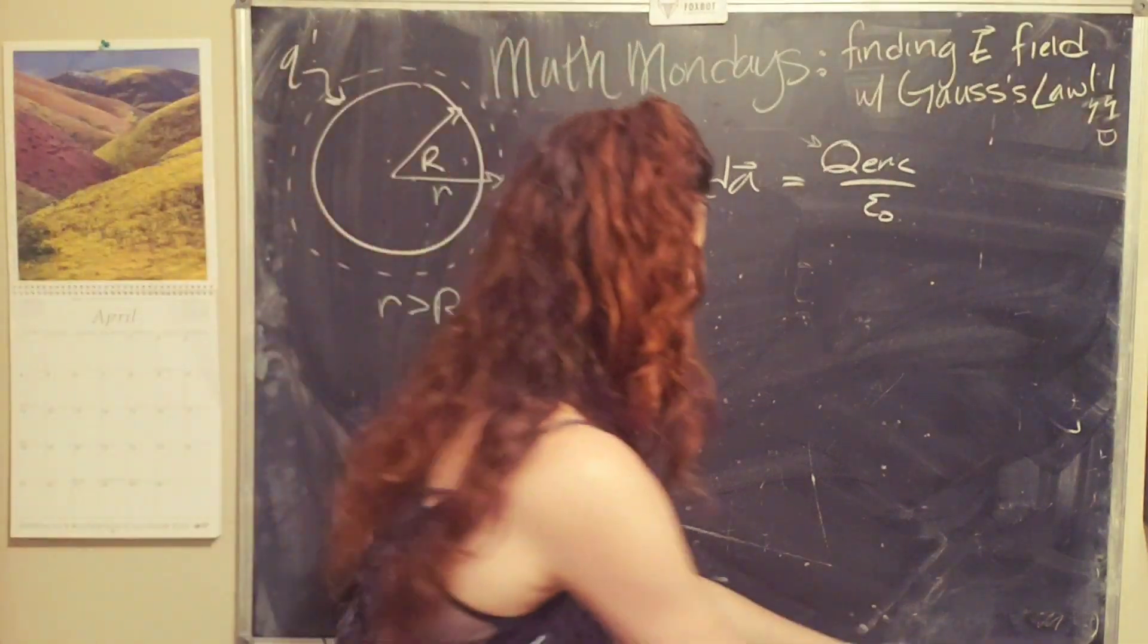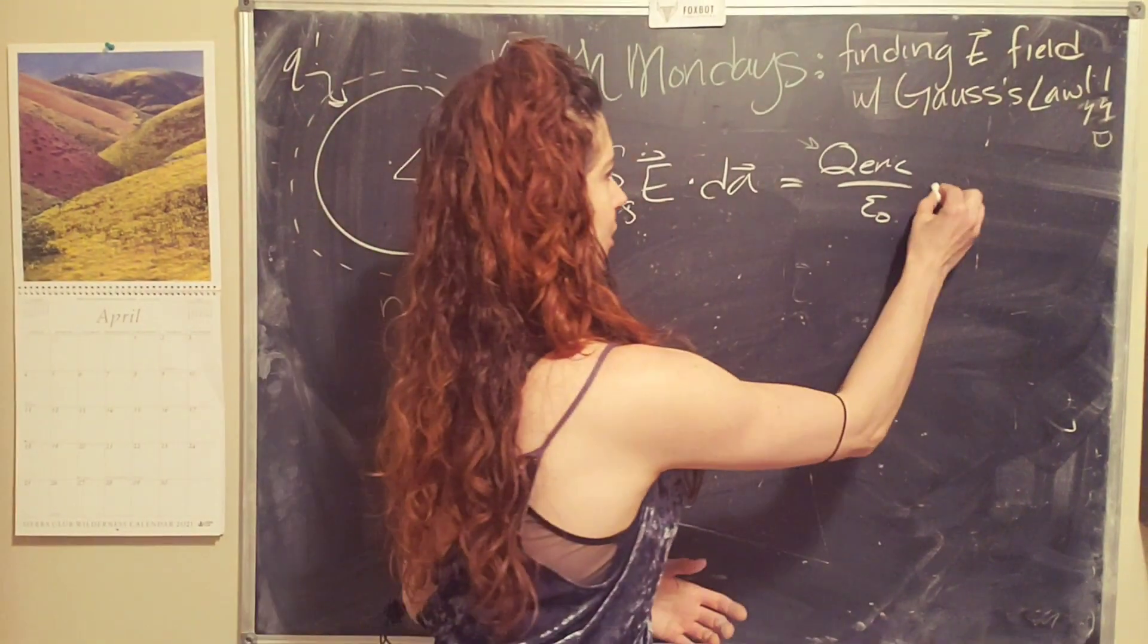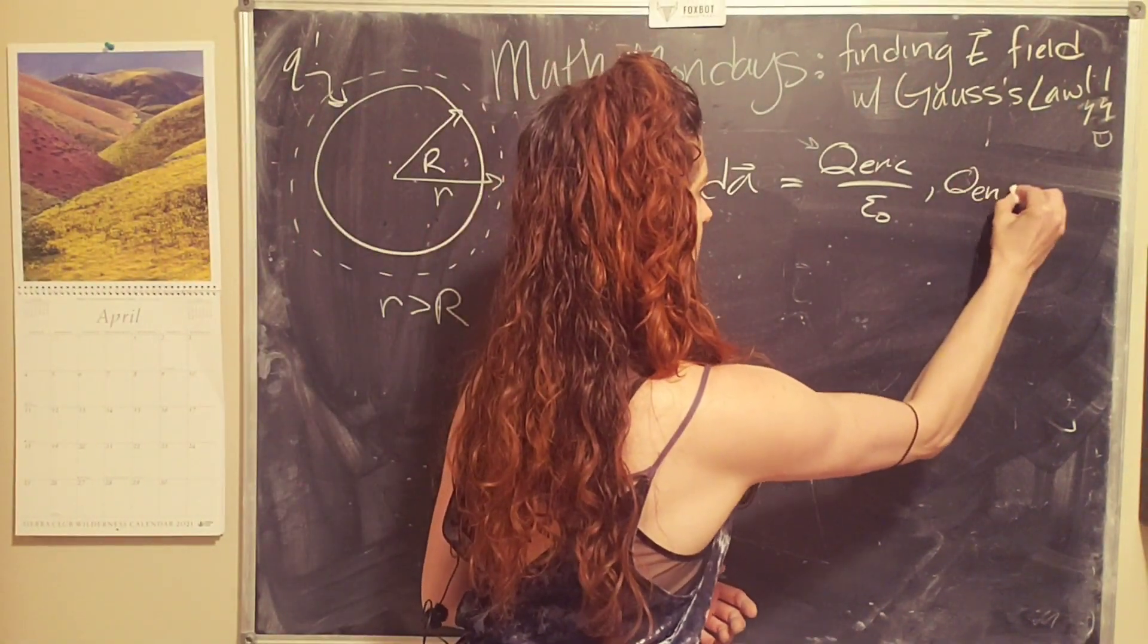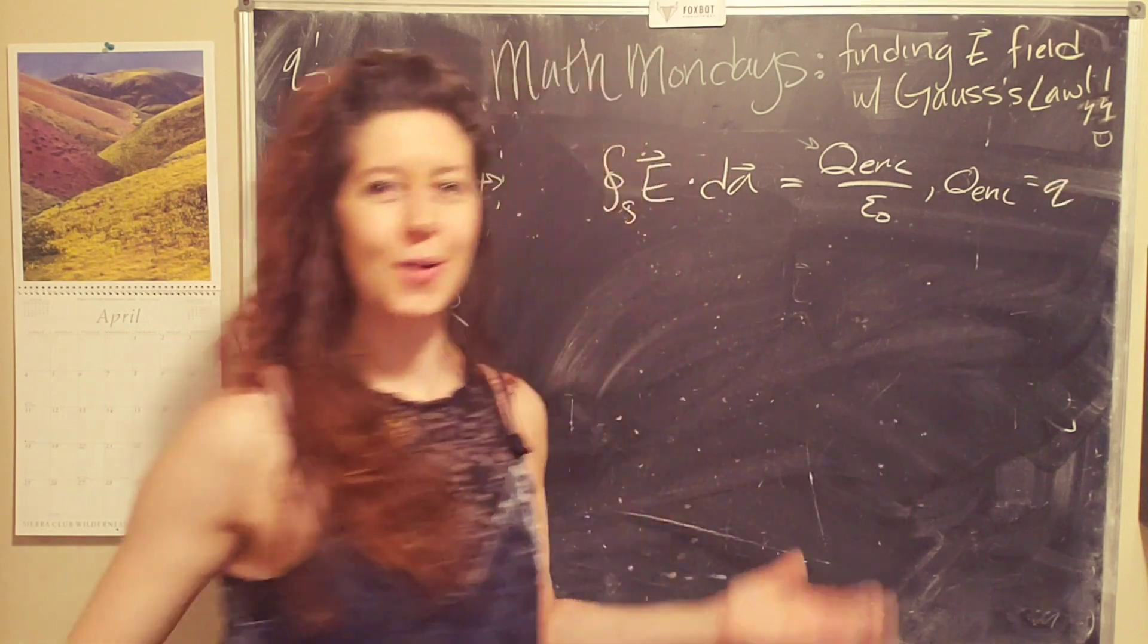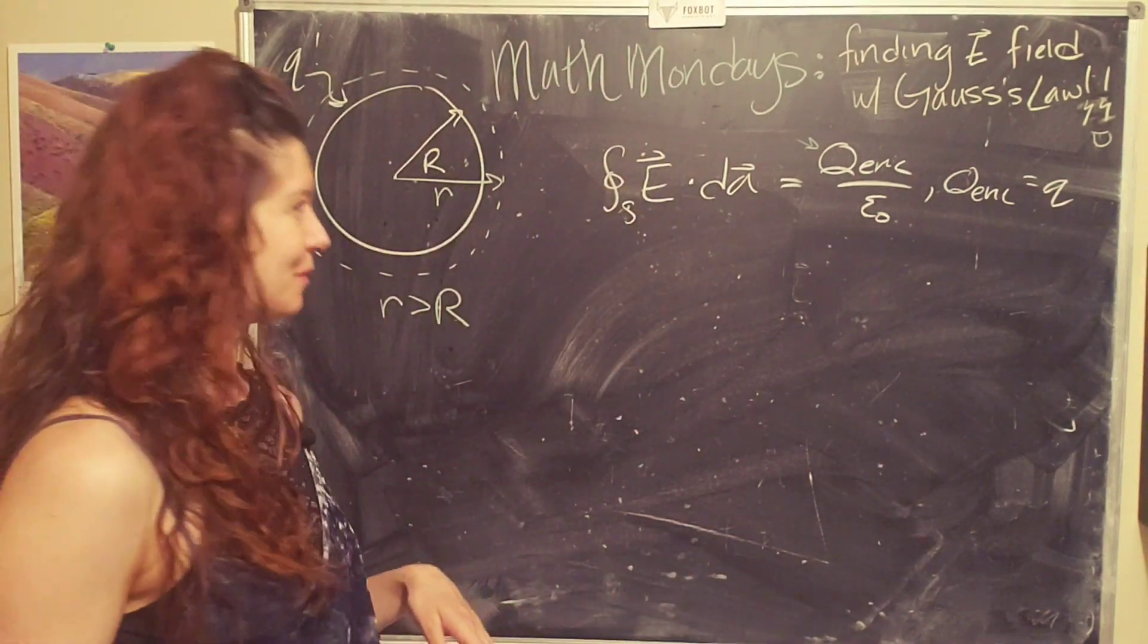And we want to make sure that the radius of our Gaussian surface, little r, is bigger than the radius of the sphere. And with that, we can start to apply geometry and symmetry to simplify this. So the first thing that I'm going to do is say, okay, q enclosed is just little q. Woo! First problem down.